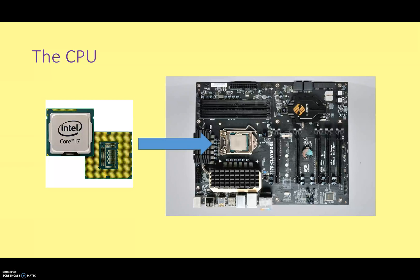Right, let's take a look at a CPU and where it goes in a computer system. Here we have a nice Intel Core i7 CPU, and this is Intel's top-of-the-range consumer CPU, quite expensive, very fast.